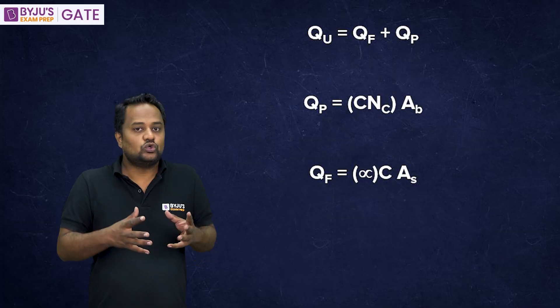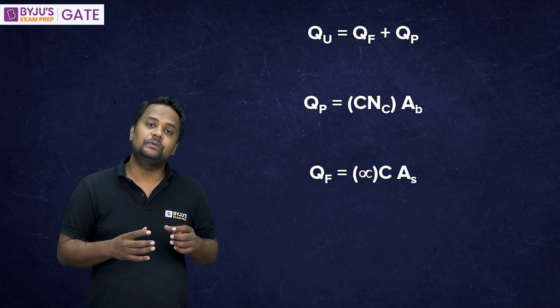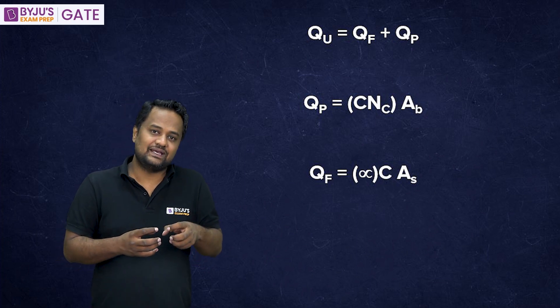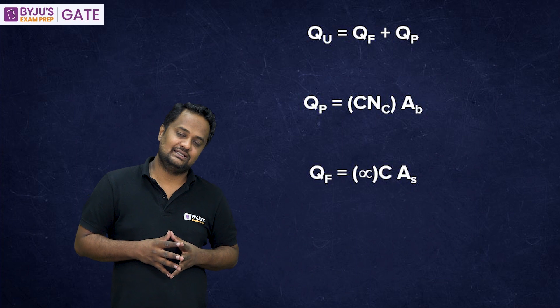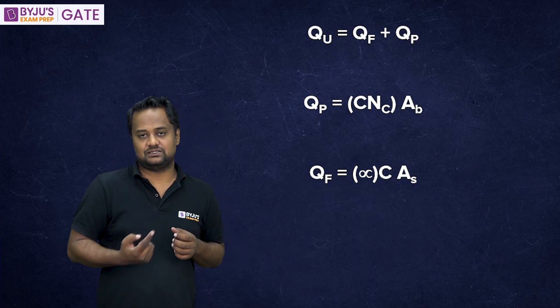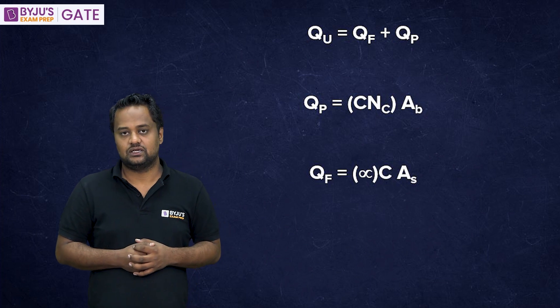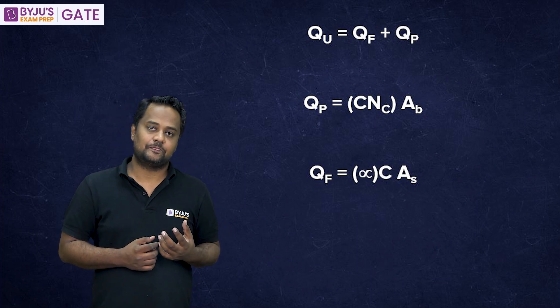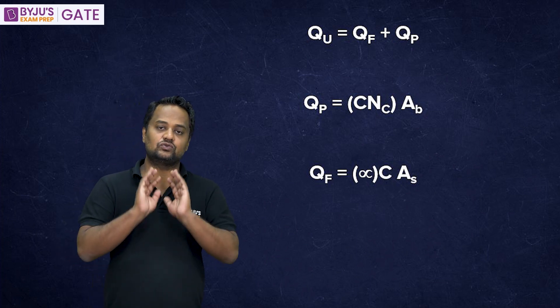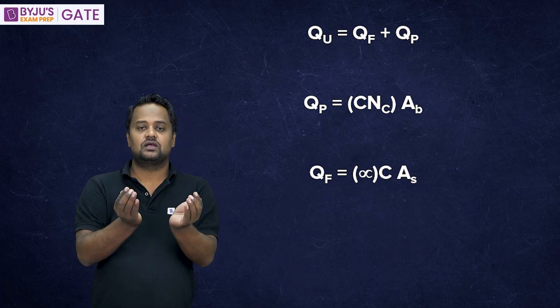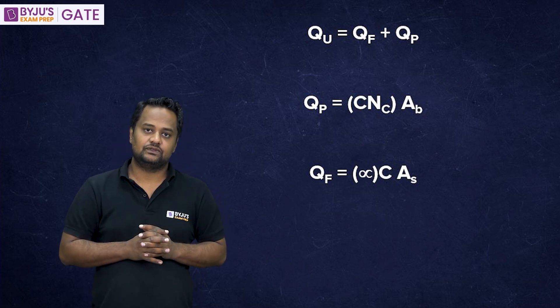QU is QP plus QF. So, QP is stress at the base. That is CNc into area base. Of course, C here has to be used of the cohesion at the base. And QF for the clay is alpha. That is adhesion factor into C. C is the average cohesion along the length of the pile into area surface. So, simple,